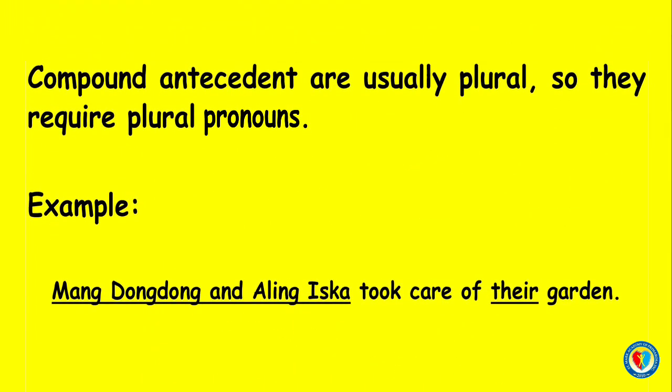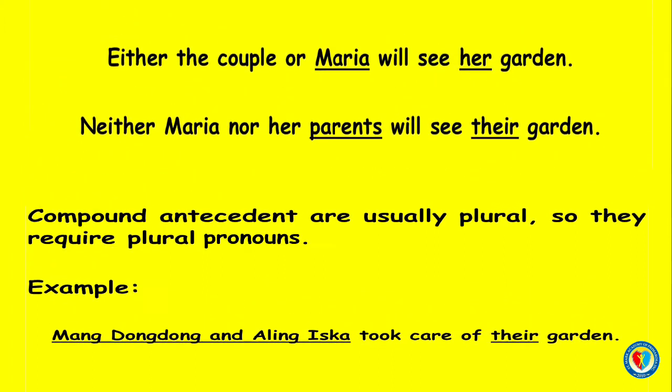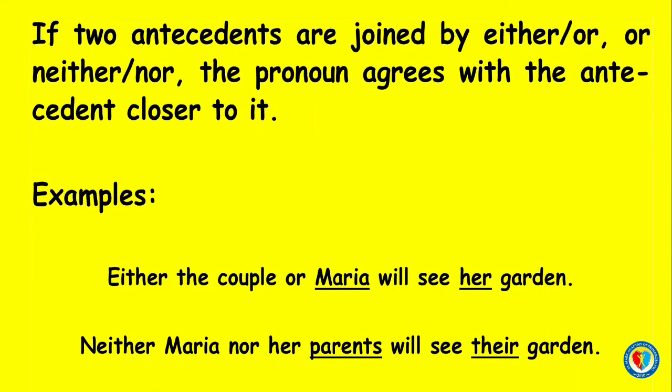Compound antecedents are usually plural, so they require plural pronouns. Example: 'Ma'am Dundong and Aliwiska took care of their garden.' If two antecedents are joined by either/or or neither/nor, the pronoun agrees with the antecedent closer to it.